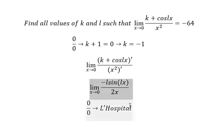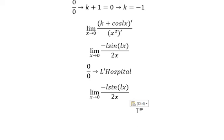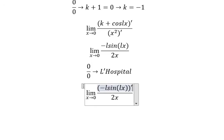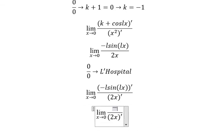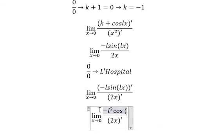We do first derivative on numerator and denominator. This one you will get about negative l²*cos(lx), and this one you got about number 2.